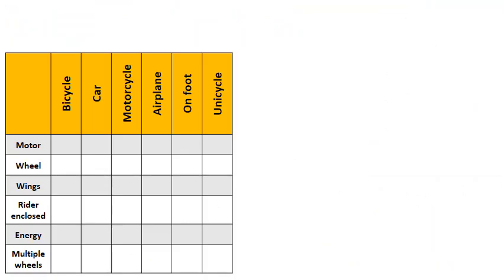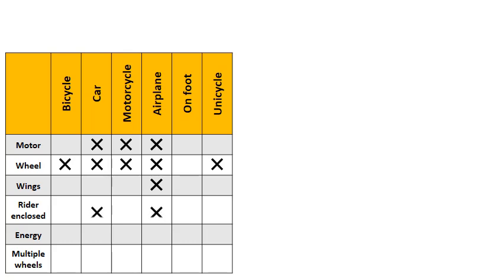Let's do another example — a silly one: modes of transportation. A bicycle, a car, a motorcycle, an airplane, walking on foot, and a unicycle. Which has a motor? The car, motorcycle, and airplane. Which has at least one wheel? Everything besides walking on foot. Which has wings? The airplane. Which has the rider enclosed? The car and the airplane. Which requires energy? All of them — even walking on foot requires energy from your own body.